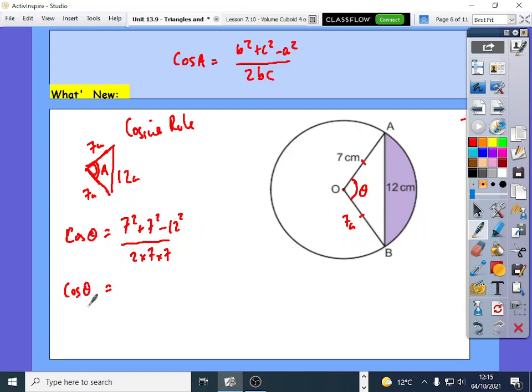I'm going to put that in the bracket: 7 squared plus 7 squared minus 12 squared, all over 2 times 7 times 7. You will get a negative number, which is minus 0.469. And don't worry about that negative number.